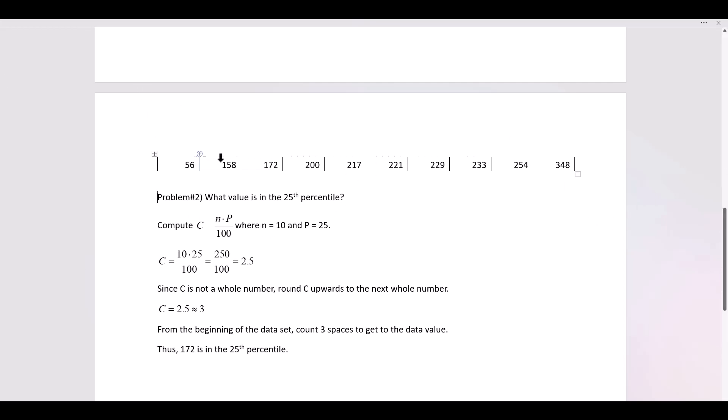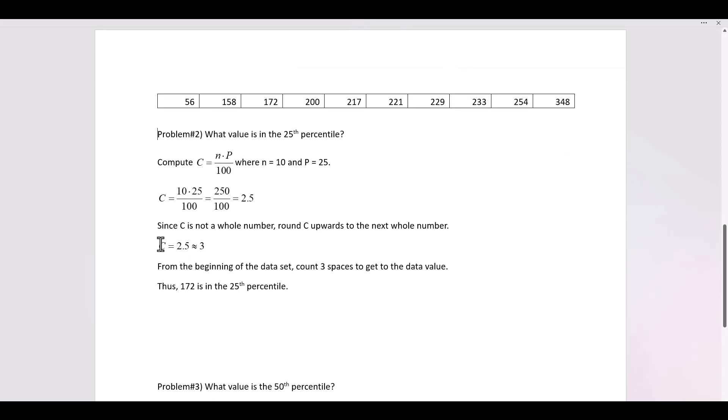N is 10 because we have 10 data values. P is 25. We're given the 25th percentile. 10 times 25 is 250, divided by 100, 2.5. Now since C is not a whole number, we will round C upwards to the next whole number. C rounds up to 3.